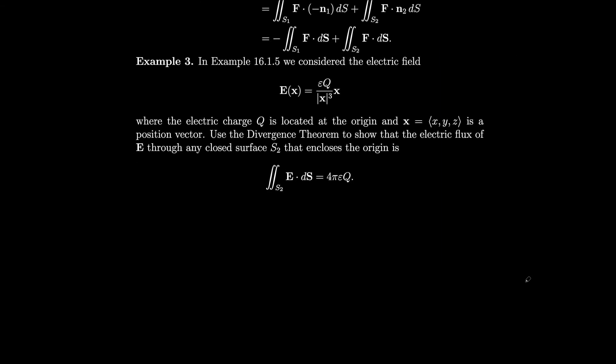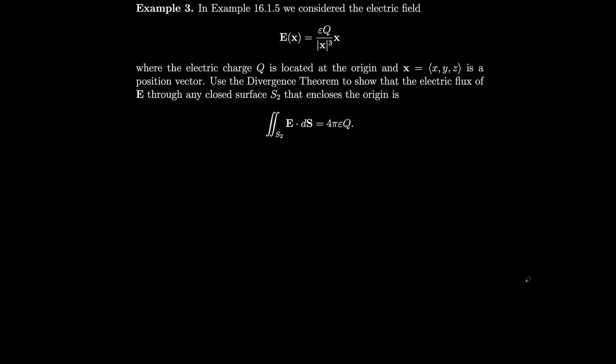As an example, let's look at the electric fields from example 16.1.5. An electric charge q is located at the origin, x = (x, y, z) is a position vector, and we use the divergence theorem to show that the electric flux of E through any closed surface S2 enclosing the origin is ∫∫ E · dS = 4πεq. Rather than integrating over any arbitrary closed surface, we introduce a sphere S1 of radius a, since the result should hold for any closed surface including a sphere.